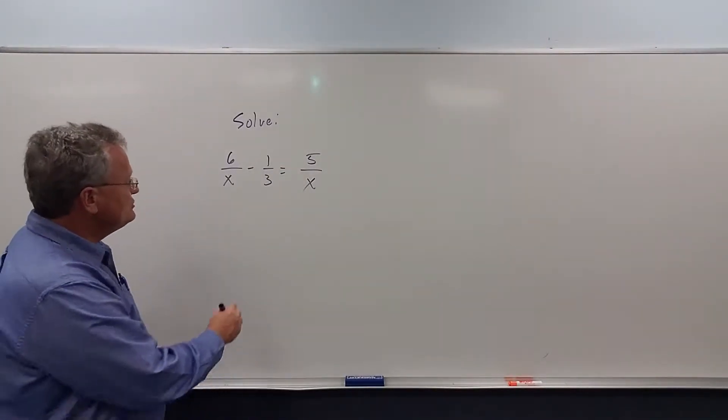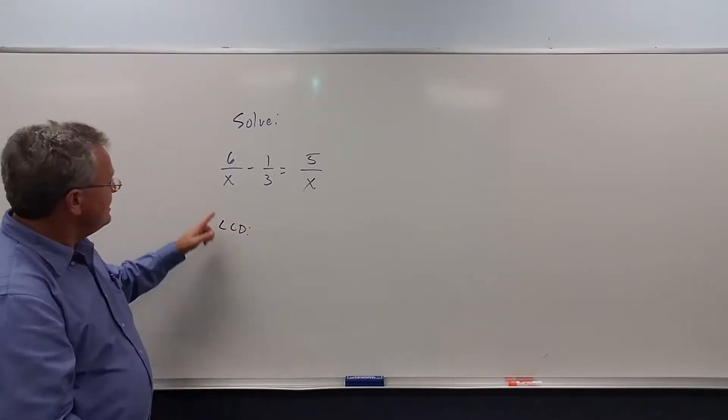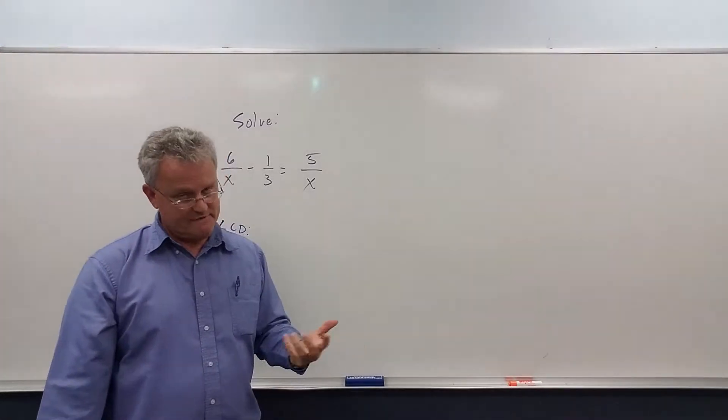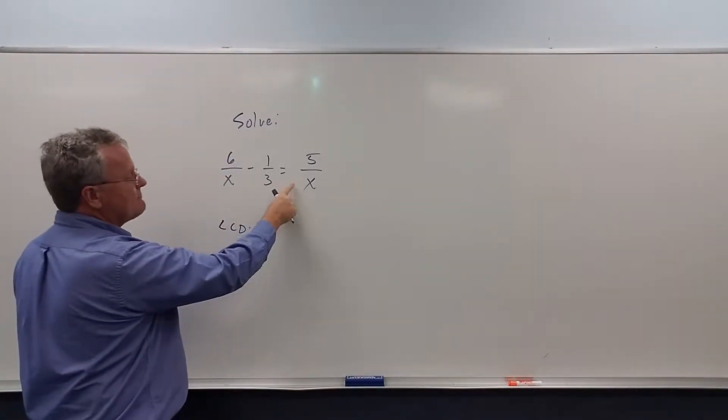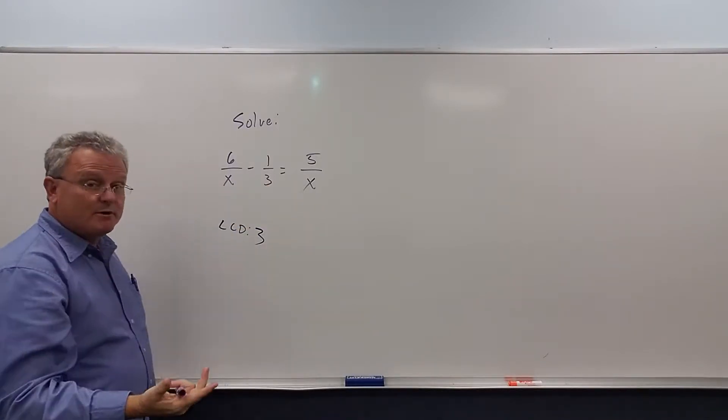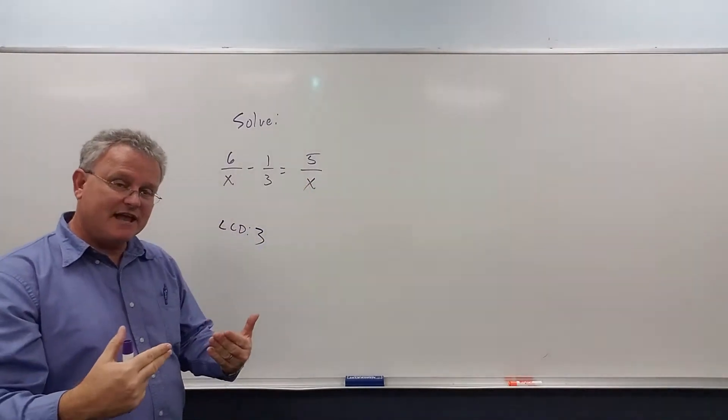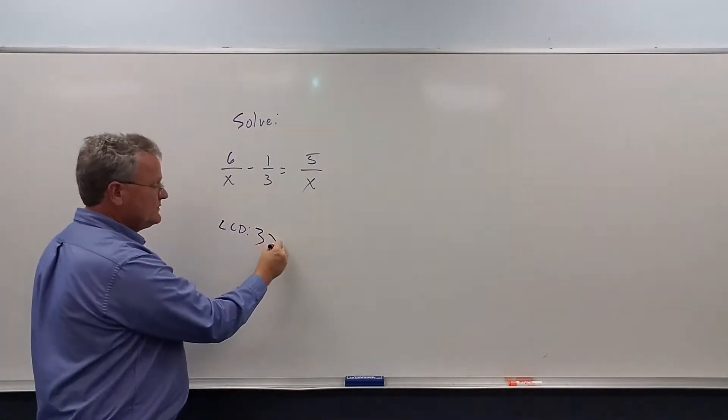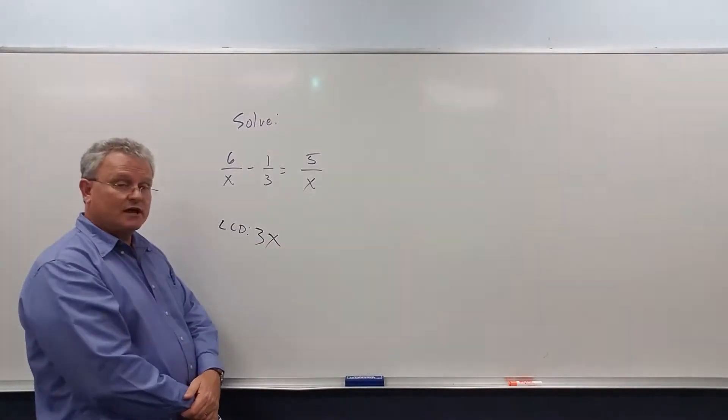Alright, so to do this we've got to figure out what is the least common denominator. You've got to look at all the denominators and find the least common denominator. Well there's only one number, that number is 3. For the variable part, x to the 1 and x to the 1, they have the same exponent, so we just write it down. So our least common denominator is 3x.